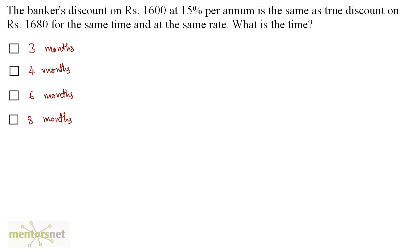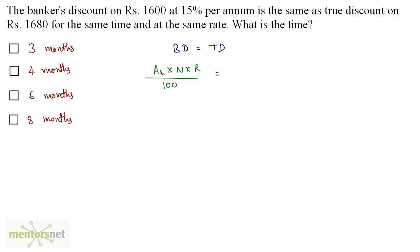The banker's discount on 1600 rupees at 15% per annum is the same as the true discount on 1680 rupees for the same time and the same rate. What is the time? We are given that banker's discount equals true discount, with different amounts. The formula for banker's discount given the amount is A·N·R upon 100 plus N·R.